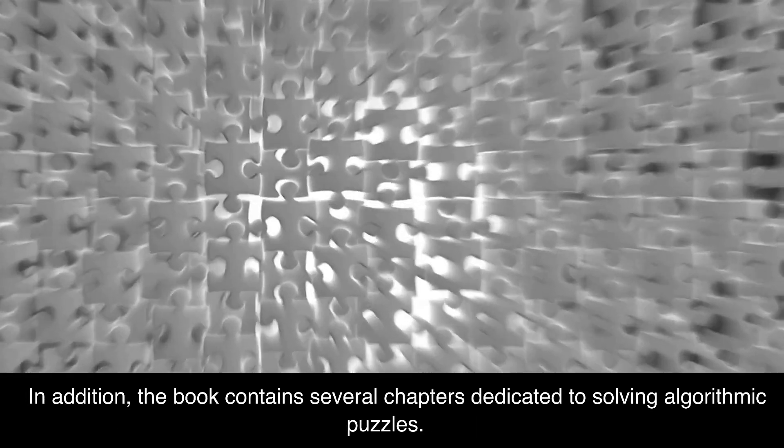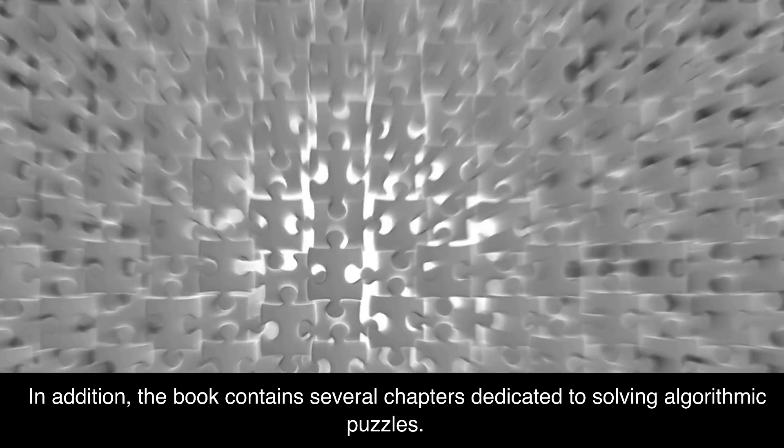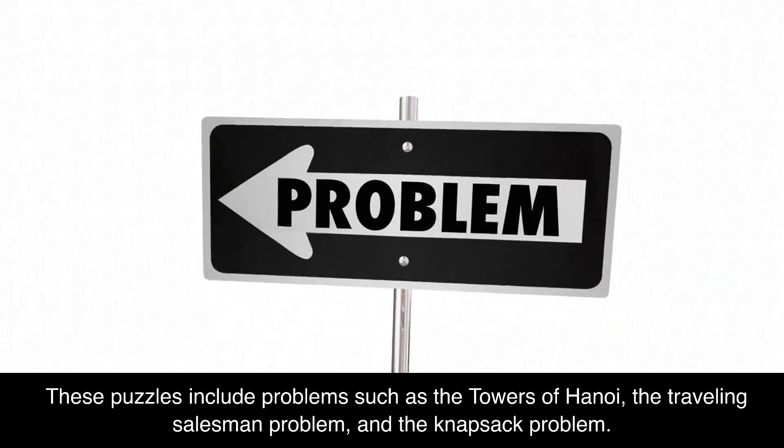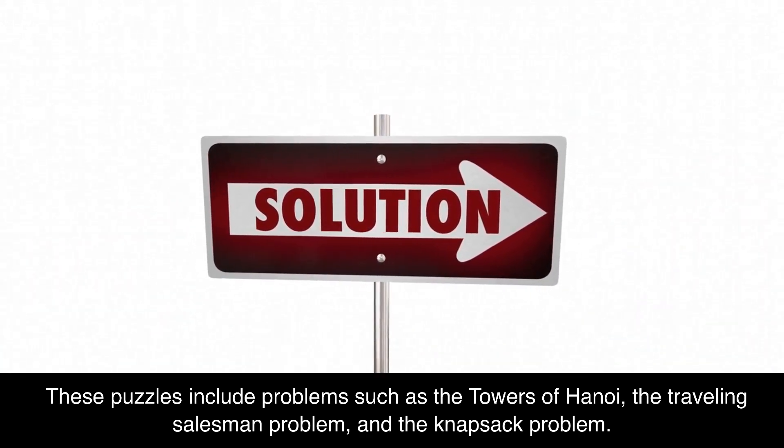In addition, the book contains several chapters dedicated to solving algorithmic puzzles. These puzzles include problems such as the towers of Hanoi, the traveling salesman problem, and the knapsack problem.